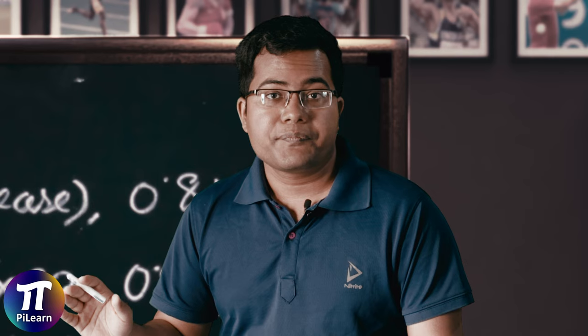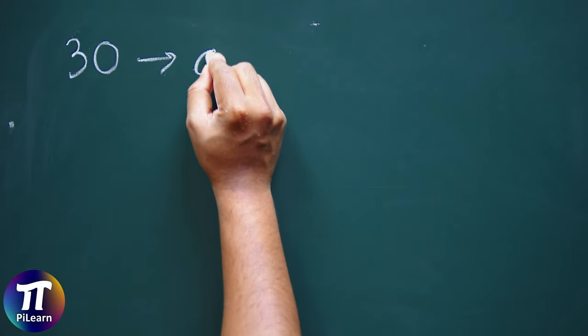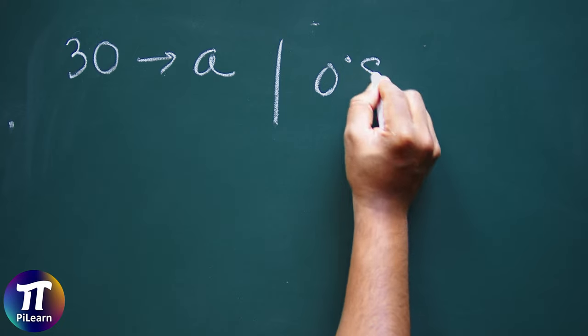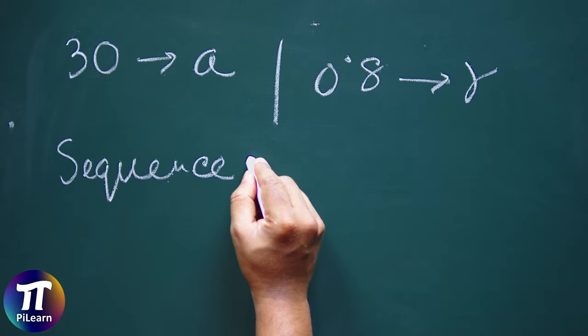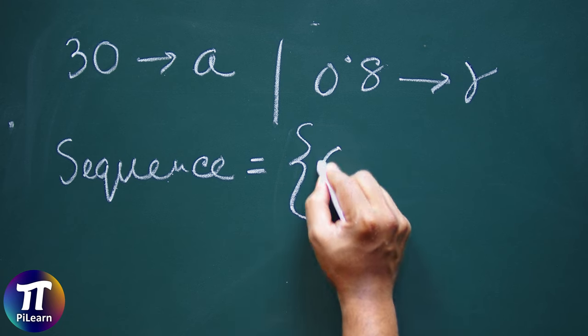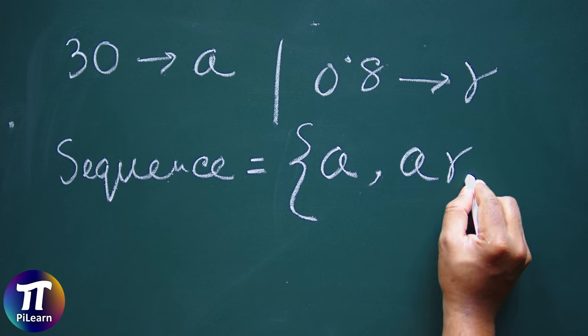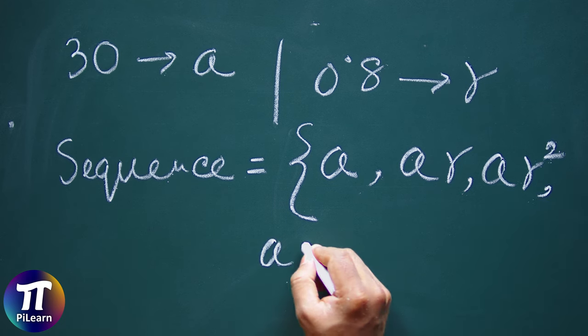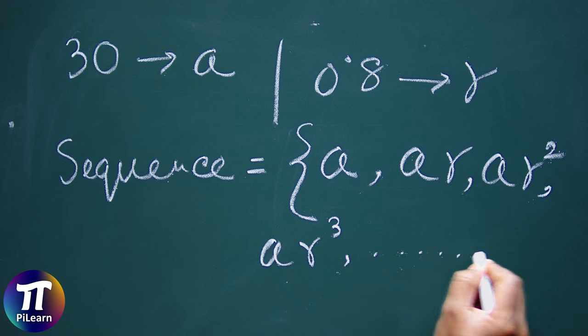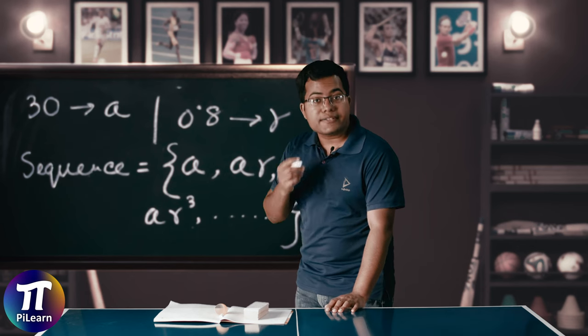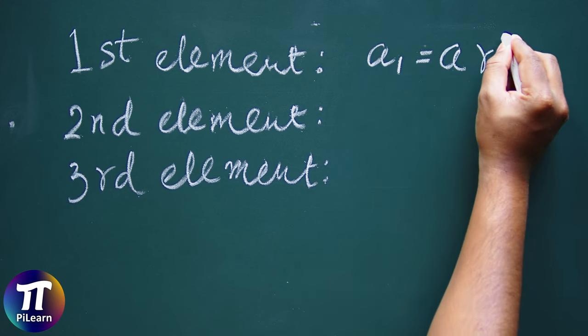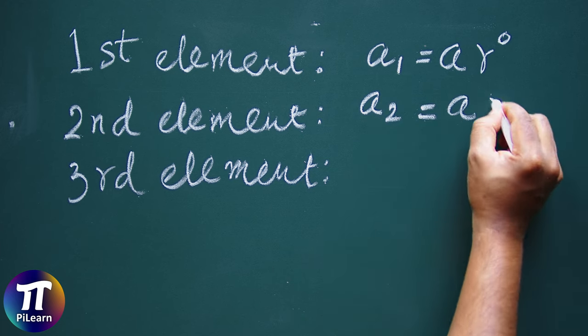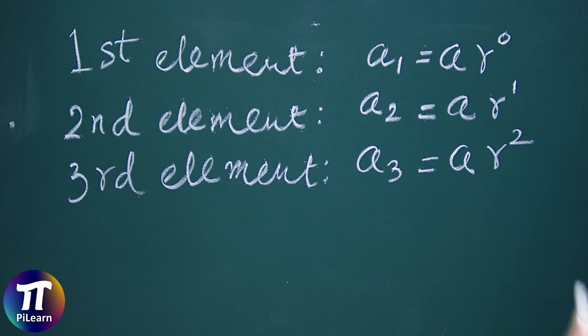Mathematicians have known about geometric progression for more than two millennia. For the general case we can substitute 30 with the symbol A and 0.8 with the symbol R. Now we have the sequence as: a, ar, ar squared, ar cubed, and so on. The first term of the sequence is a·r to the power 0, the second is a·r to the power 1, the third is ar squared, and so on.